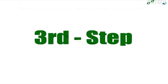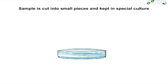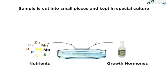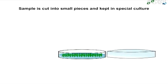In the third step, the plant sample is cut into small pieces which are then placed in a special culture medium consisting of a solution of nutrients. This solution also contains growth hormones which stimulate division of cells, resulting in a large number of cells. These cells develop into plant tissues which then form tiny plantlets.